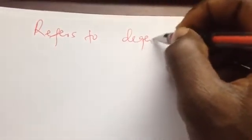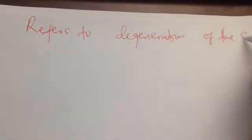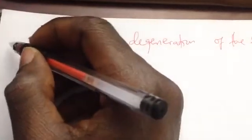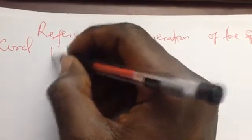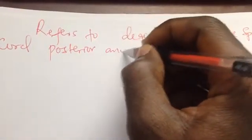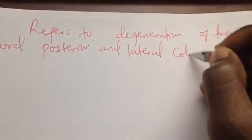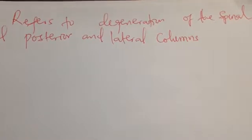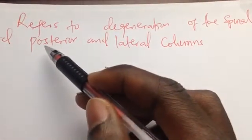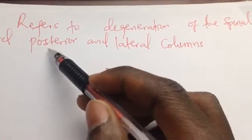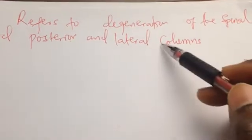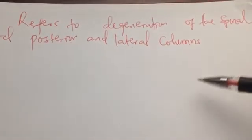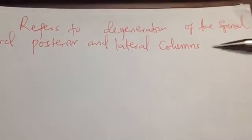This disease refers to a degeneration of the posterior and lateral columns of the spinal cord. The posterior columns contain the fibers of the dorsal column medial lemniscus system, while the lateral columns contain the fibers of the lateral corticospinal tract descending from the cerebral cortex.